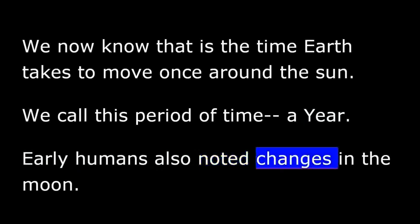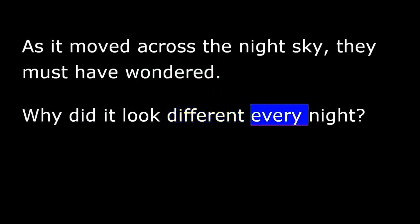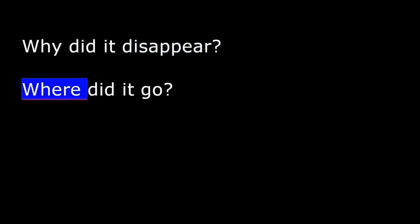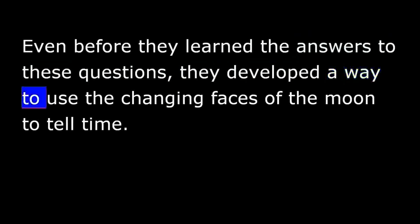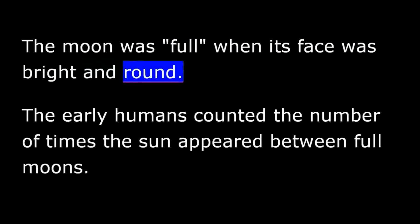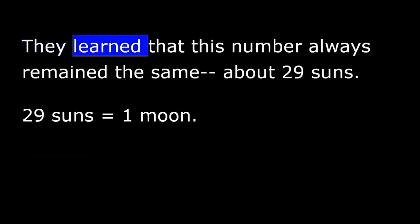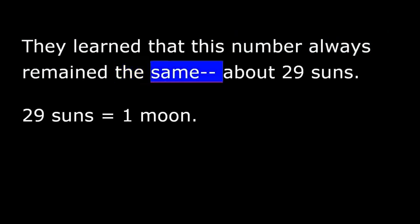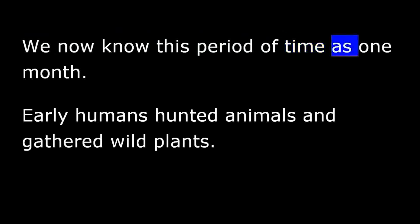Early humans also noted changes in the moon. As it moved across the night sky, they must have wondered. Why did it look different every night? Why did it disappear? Where did it go? Even before they learned the answers to these questions, they developed a way to use the changing faces of the moon to tell time. The moon was full when its face was bright and round. The early humans counted the number of times the sun appeared between full moons. They learned that this number always remained the same, about 29 suns. 29 suns equaled one moon. We now know this period of time as one month.